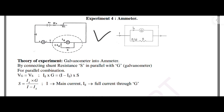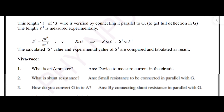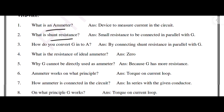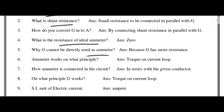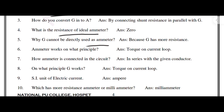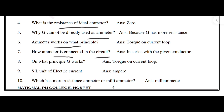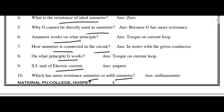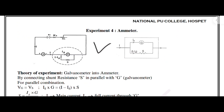For the ammeter experiment, the VIVA questions are: what is an ammeter; what is shunt resistance; what is the resistance of an ideal ammeter; why can a galvanometer G not be directly used as an ammeter; on what principle does an ammeter work; how is an ammeter connected in a circuit; on what principle does G work; what is the SI unit of electric current; which has more resistance — an ammeter or a milli-ammeter?